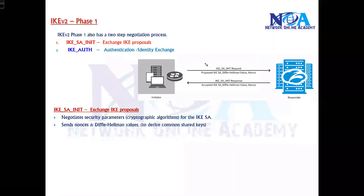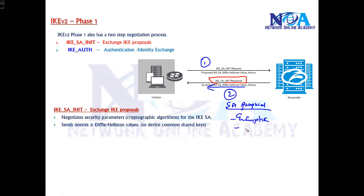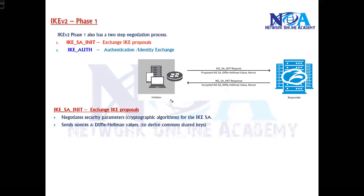The second message is the SA Init response. The responder replies with its own SA proposal message — technically called the SA Initiate response — which includes the chosen encryption algorithm, integrity hashing algorithm, Diffie-Hellman group, and nonce values. The nonce value must match what was sent by the initiator; if it does not match, the message is rejected.